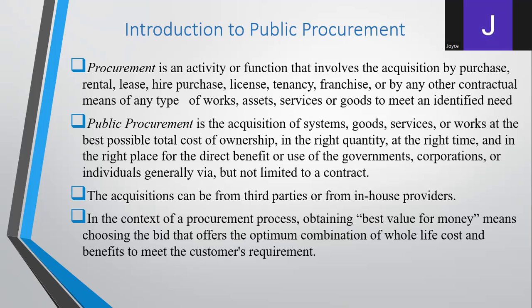Then we have hire purchase, where you decide to procure using installments — you pay the first installment, then other installments depending on your agreement with the supplier. We also have license and tenancy, where you enter into an agreement with a certain institution to become a tenant for a certain period of time. Franchise is where you use somebody's name to do business and pay what is called royalty. The purpose of acquiring all this is to meet an identified need.